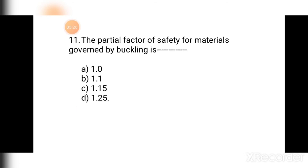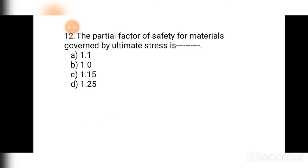Question number eleven: The partial factor of safety for materials governed by buckling is — (a) 1, (b) 1.1, (c) 1.15, (d) 1.25. For buckling and for yield, the partial factor of safety is 1.1. Hence the correct answer is (b) 1.1.